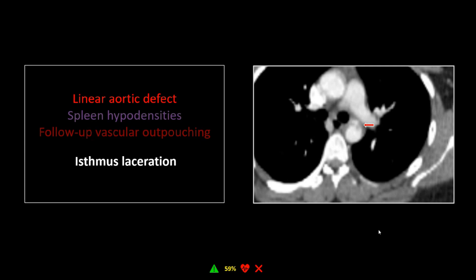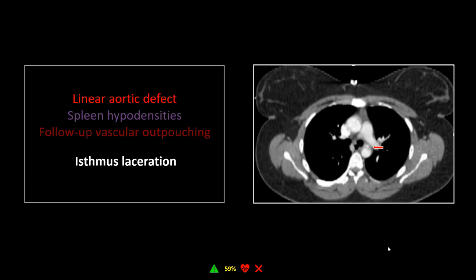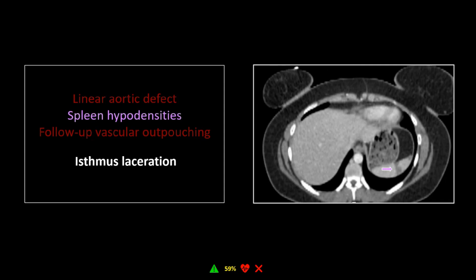It's also where the ductus diverticulum can live — a normal, broad-based outpouching at the isthmus region of the aorta. But this is far too irregular. There is a very slight density around this aorta — you always want to look for a little density in the periaortic mediastinal tissues. There is a tiny crescent of gray, but it's almost nothing compared to most aortic lacerations. So I was really given a moment: that is too irregular to be a ductus — it's got to be a laceration. But there's so little stranding, I was doubting myself. Then I went down into the abdomen and found well-demarcated, subcapsular, wedge-shaped hypodensities in the spleen.